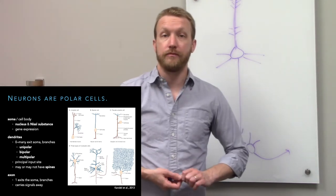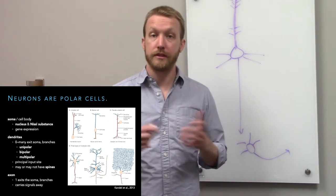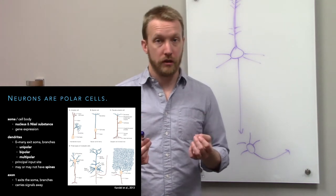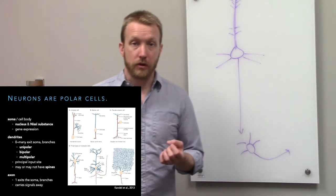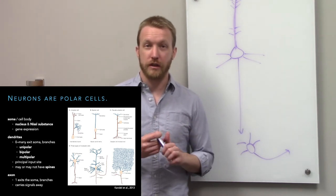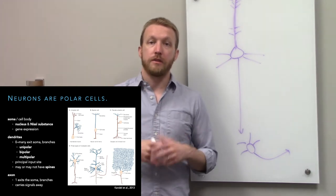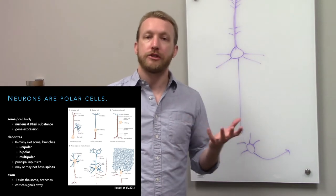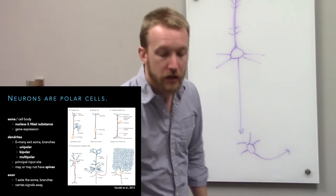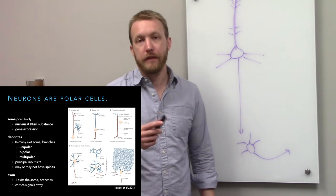Purkinje cells have very complicated dendritic arbors. They're involved in movement, just like motor neurons, but Purkinje cells are there for motor learning. They need to work with many more different types of information than motor neurons to create complicated movement patterns. So depending on the number of dendrites, that determines how much you can listen to — the more information you have to integrate, the more dendrite you need. If you're just a simple relay, you might not even need dendrites.